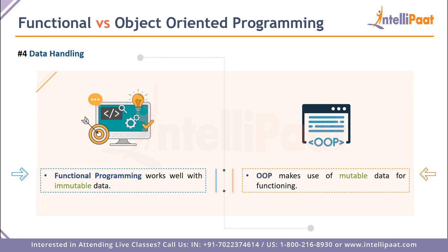Point four is data handling. Functional programming deals very well with immutable data — data that does not change in real time, where operations and operators are set. OOP, on the other hand, handles mutable data well, where data is continuously changing and objects can track those changes. The basic rule is: if your data doesn't change, prefer functional programming; if your data changes a lot, prefer object oriented programming.